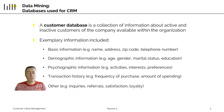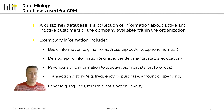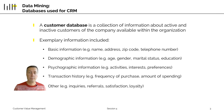Looking at the different variables that can be included in the customer database, this can literally be anything you want and anything we know about the customer. It can be basic information like the name, address, zip code, or telephone number. If you know the zip code of a person, you can relatively easily buy information about characteristics of people living in that zip code — which type of houses, income, or cars they usually have. Obviously, demographic information such as age, gender, marital status, education; any type of psychographic information — activities, interests, preferences. Very important is the transaction history: frequency of purchases, amount or spending, because we use this, for example, in non-contractual settings to calculate the peer life. Remember when we talked about the Pareto-NBD model in session two.